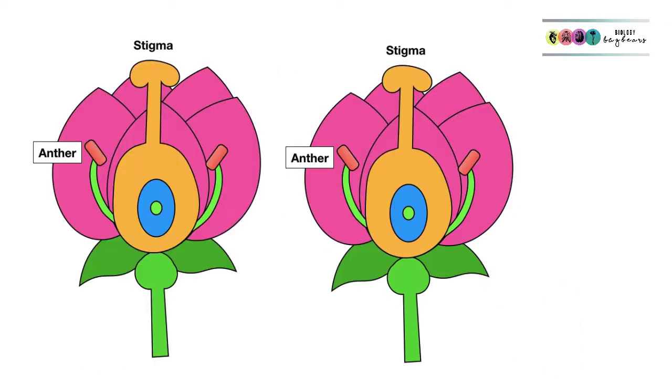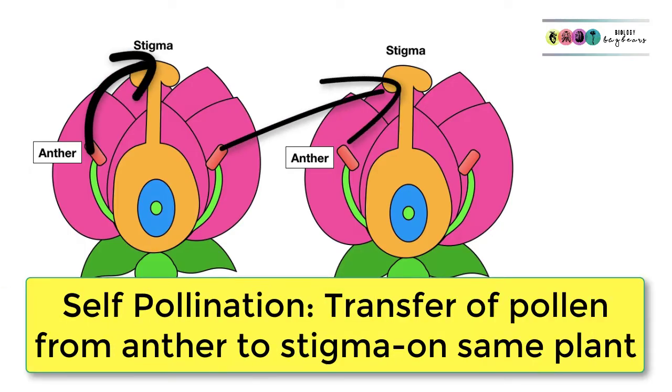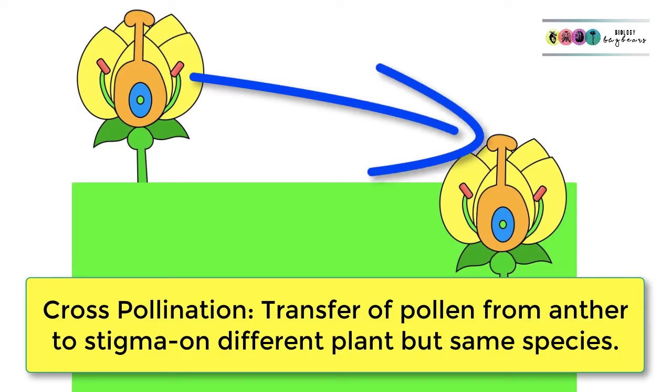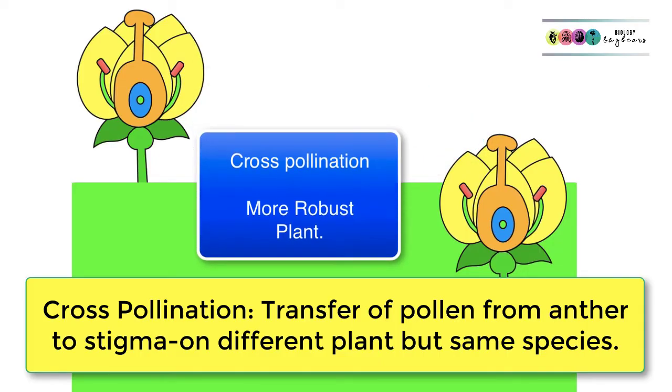If the transfer of pollen is from the anther to the stigma on the same flower or a flower on the same plant, this is called self-pollination. It's not ideal as it results in a less robust plant. When pollen gets transferred from the anther of one flower to the stigma of another flower on a different plant but of the same species, this is known as cross-pollination, and it's the more preferred method because it results in a more robust plant.